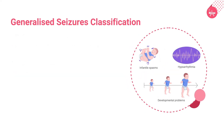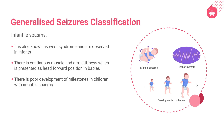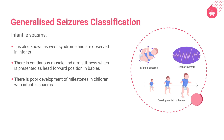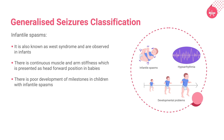The last class under generalized seizures includes infantile spasms, also known as West syndrome, which are seizures observed in infants. There is continuous muscle and arm stiffness presented as a head-forward position, and there is poor development of milestones in children with infantile spasms.